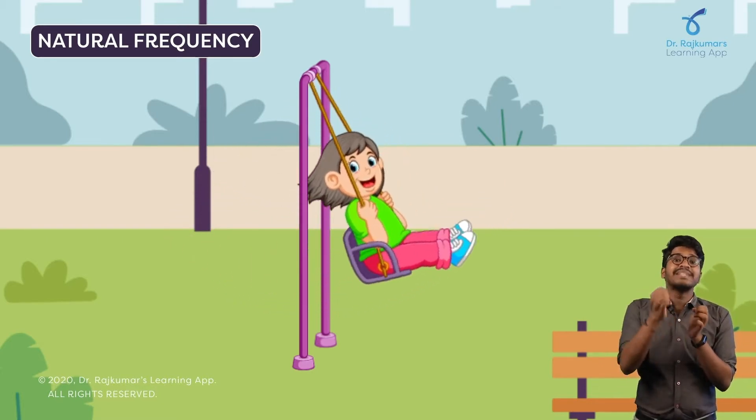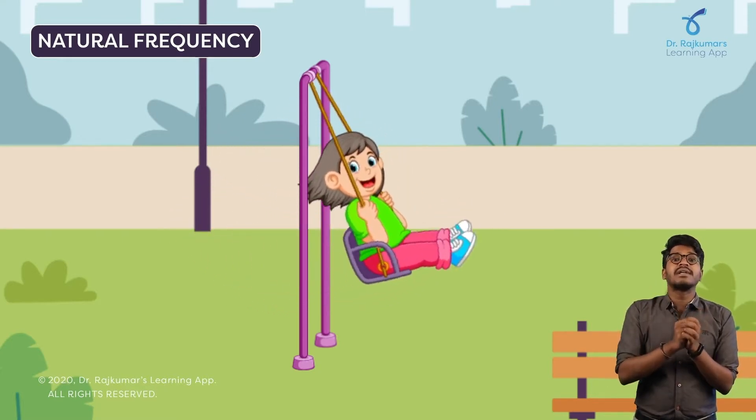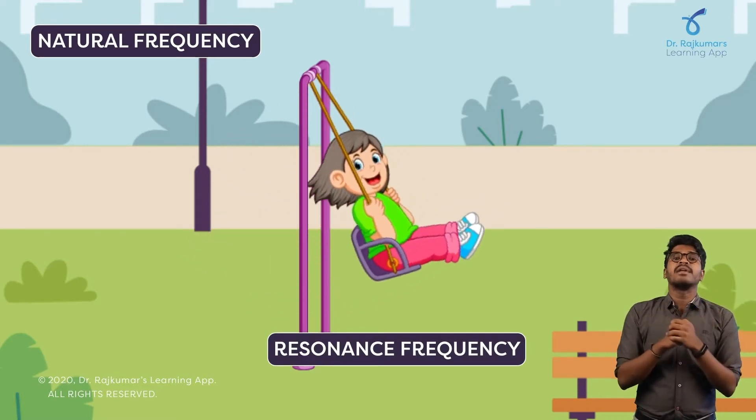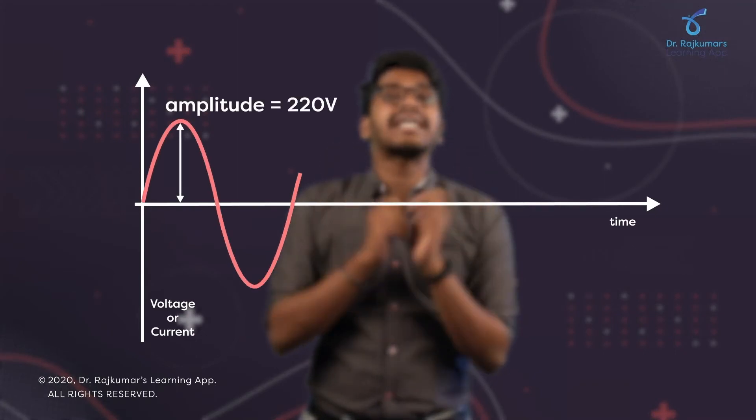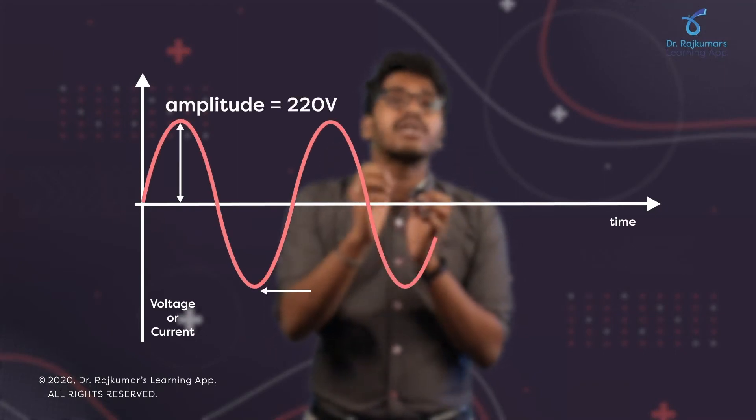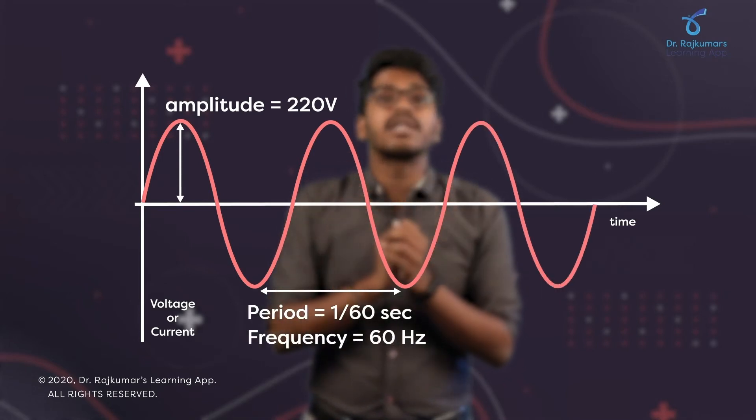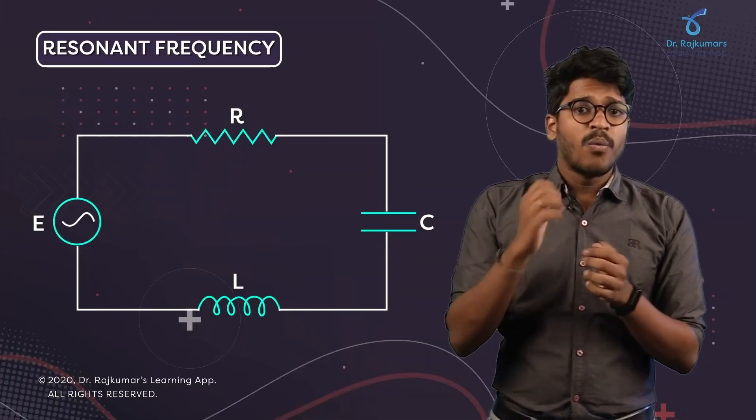The same phenomenon occurs even in an AC voltage source. In a circuit, whenever we apply an AC voltage, we see that there is maximum amplitude of current flowing through for a particular frequency of the applied voltage. This particular frequency of the applied voltage is known as resonant frequency.